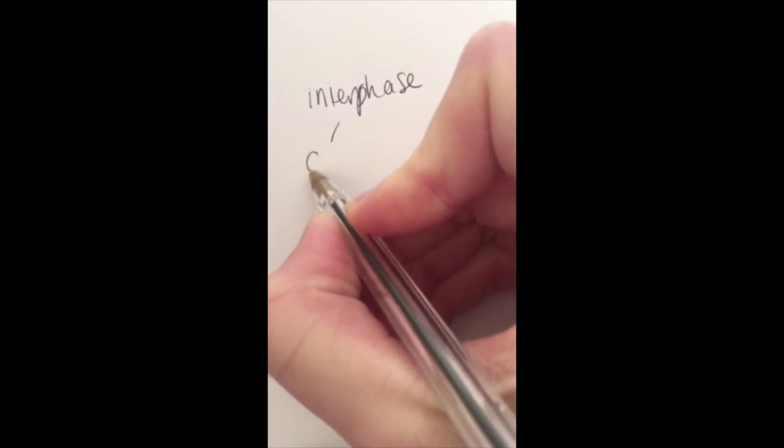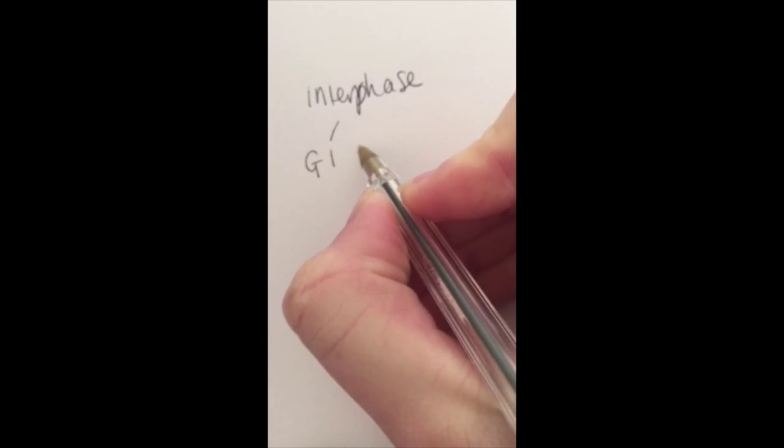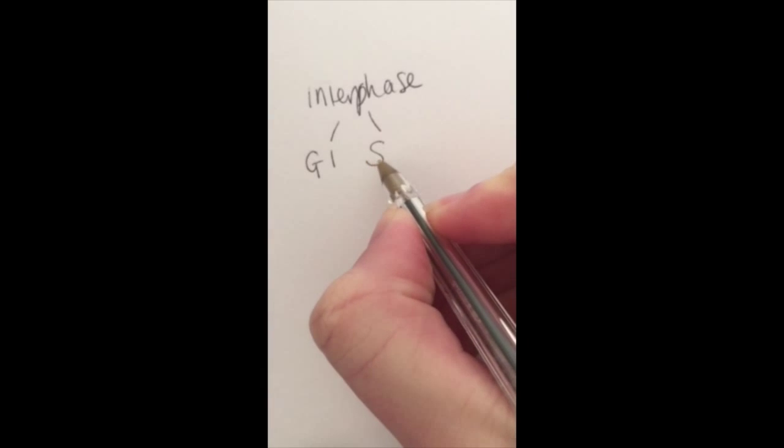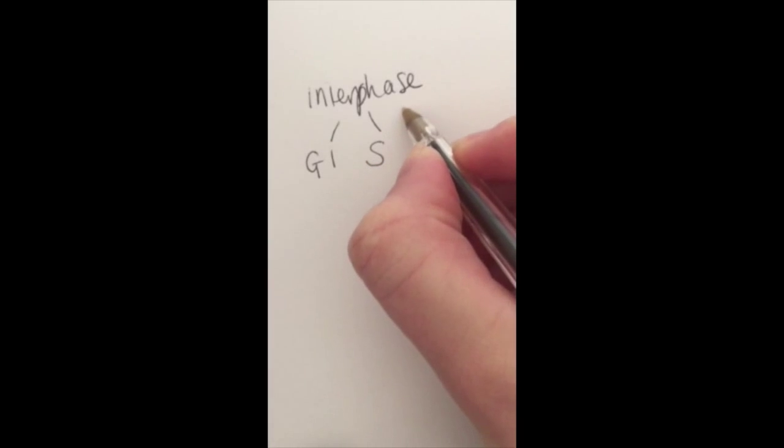So we start with the main phase, which is interphase, and that can be broken down into three stages. We've got G1, which stands for growth 1, we have S phase, which stands for synthesis, and then we have G2.